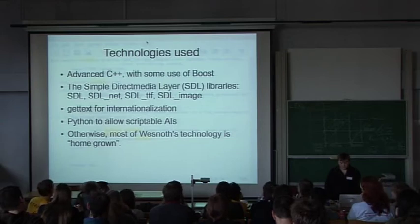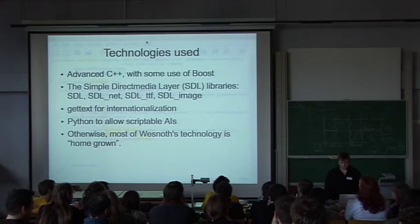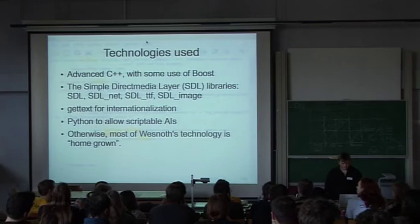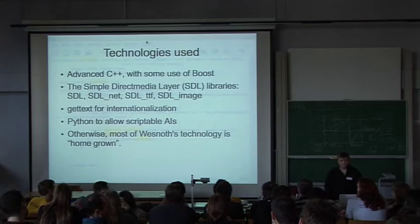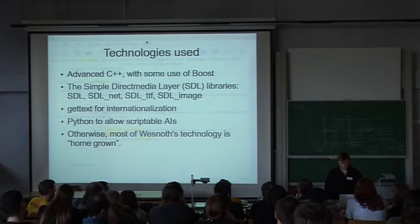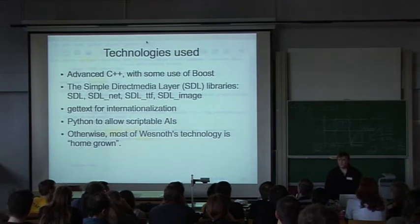These libraries give us the same interface across all the platforms we run on — Windows, Mac, Linux, and many others. Wesnoth is internationalizable using GetText, enabling translation into over 40 different languages. We also use Python to allow AIs to be scriptable in Python. This wasn't originally planned but was added later. We also use both Python and Perl to produce many scripts and tools which we use to consolidate development.